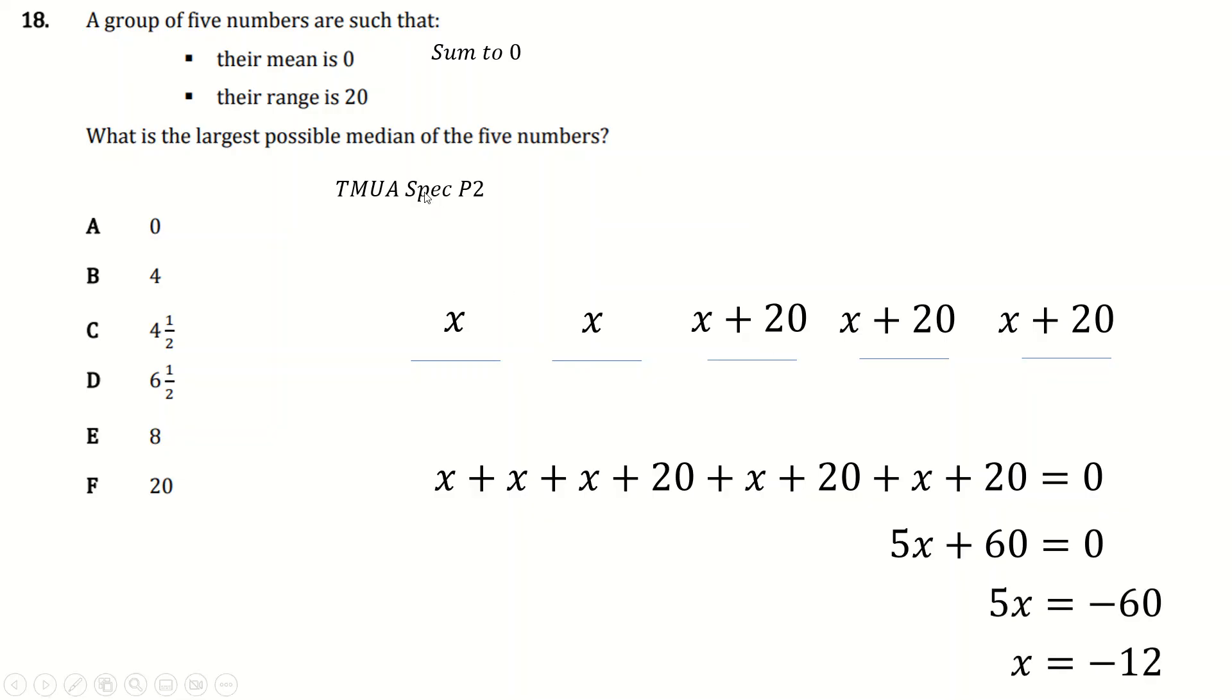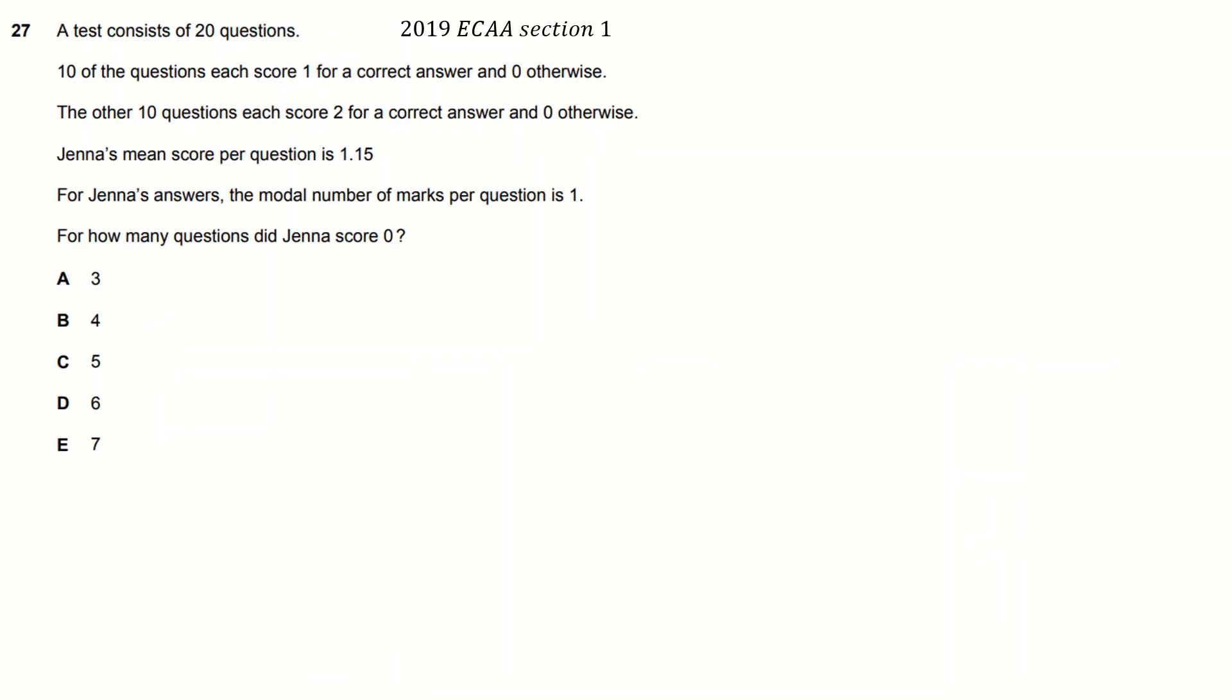And we'll get this, and we'll get this, and then we'll get this. And so x is minus 12, which means the largest possible median, minus 12 plus 20, is going to be 8. And that'll be our answer. Good. So this is from an ECA question. Test consists of 20 questions. 10 score 1 point, 10 score 2 points. You get 0 if you get them wrong. Mean score is this.